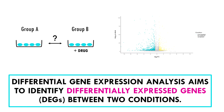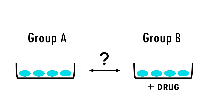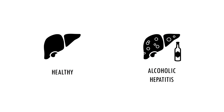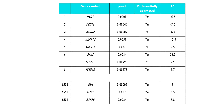Differential gene expression analysis is an essential step in RNA-seq downstream analysis. The goal is basically to identify differentially expressed genes, or DEGs, between two conditions. For example, you might be interested in studying the difference in gene expression between liver cells of healthy individuals and liver cells in individuals with alcoholic hepatitis. But differential gene expression analysis may return long lists of differentially expressed genes, in the order of hundreds or thousands.